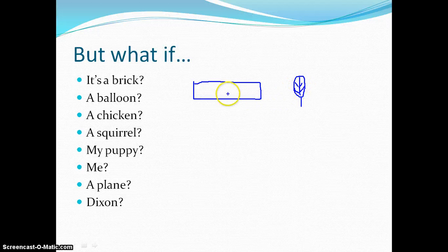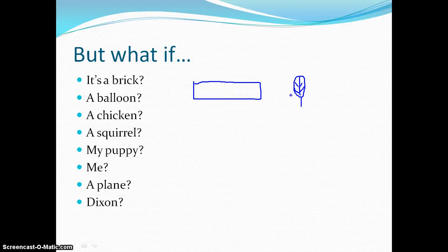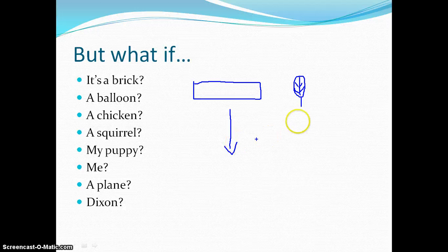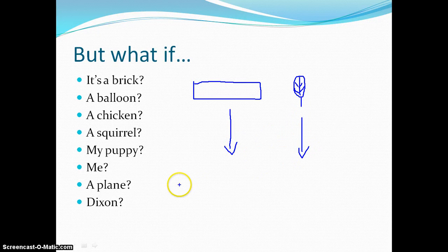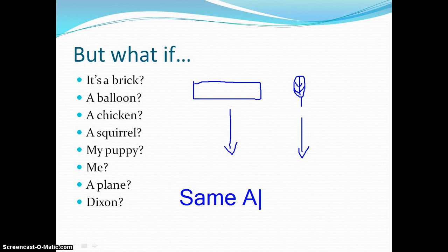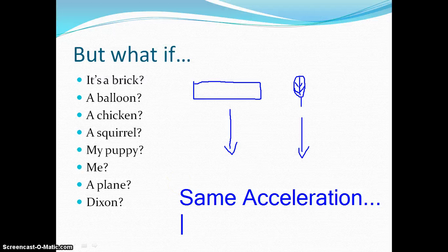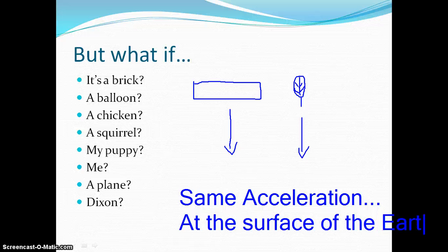So I am saying if you have a brick and a leaf, they will both fall at 9.81 meters per second squared for their acceleration. This happens for all objects at the surface of the Earth.